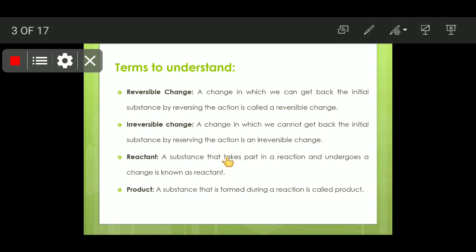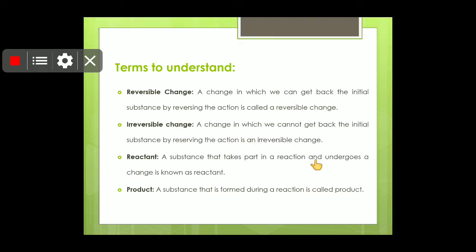Irreversible change: a change in which we cannot get back the initial substance by reversing the action is an irreversible change. For example, students, if we break the egg, so it is a physical change. But once we cook that egg, then the chemical change has taken place because we cannot get back the raw egg from that cooked egg.